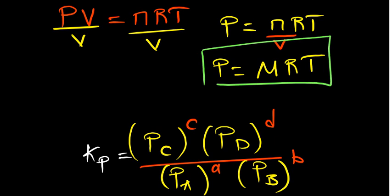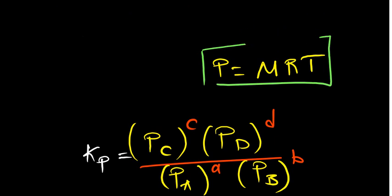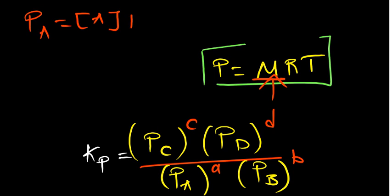So pressure is equal to concentration times RT. This tells us that the pressure of A, for example, is going to be equal to the molar concentration of A multiplied by RT. That applies to all species in the equation. Let's substitute that into our Kp expression in the next step.